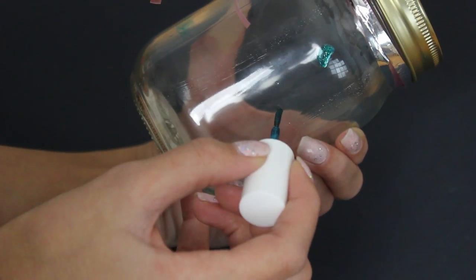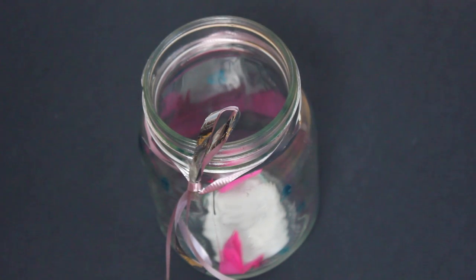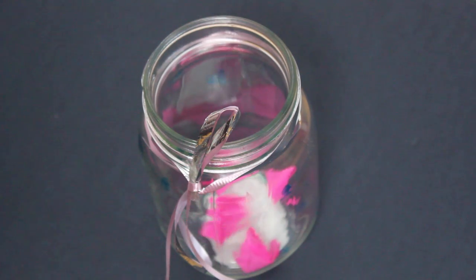And once you're happy with how your jar looks, throughout the year when something really good happens to you, write it down on a piece of paper and put it in that jar. And then at the end of the year you can go through the jar and see everything that happened to you that year.